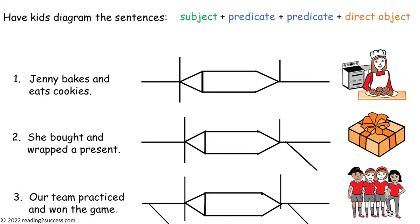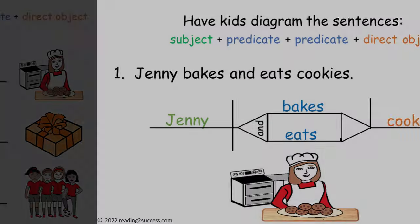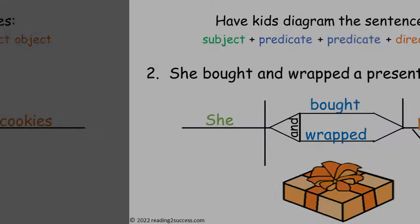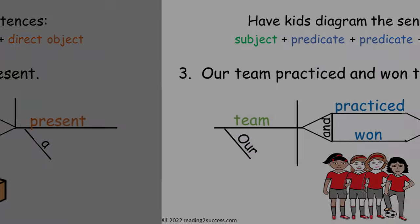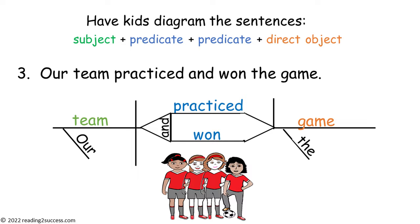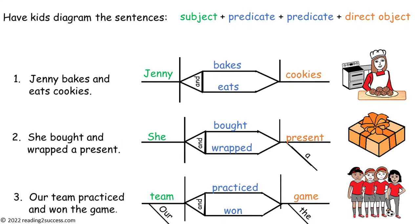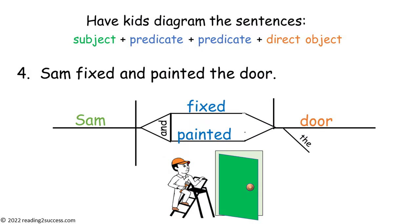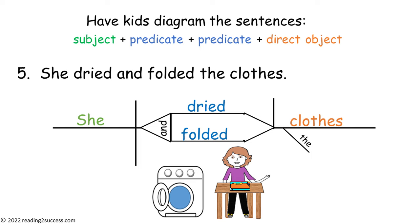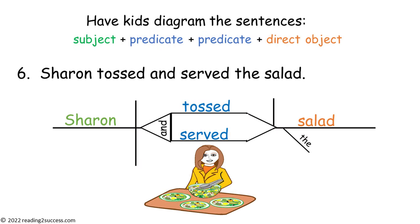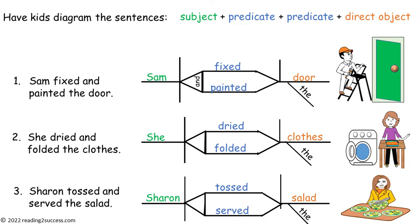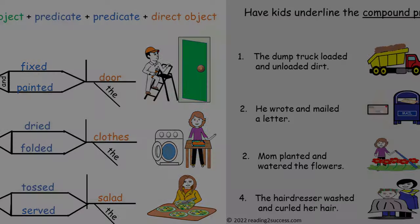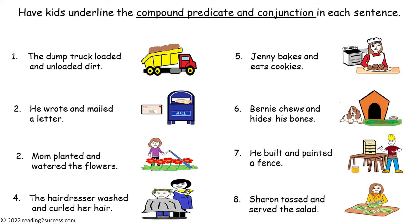Now have kids diagram the sentences for compound predicate. Sentences 1, 2, 3, and the completed example. Then have kids diagram sentences 4, 5, and 6 — here is the completed example. Now have kids underline the compound predicate and conjunction in each sentence.